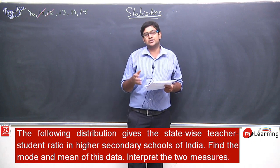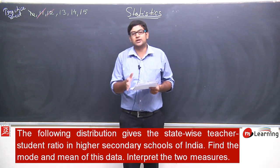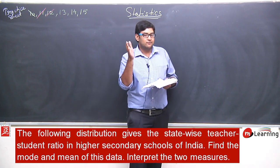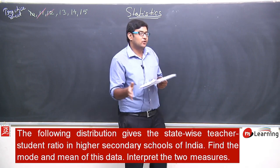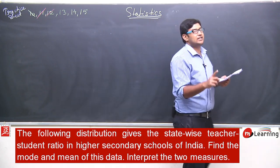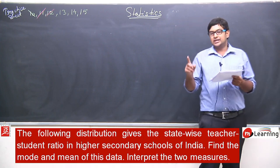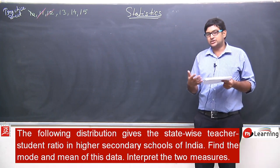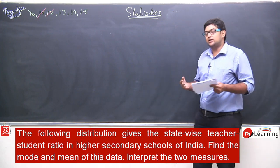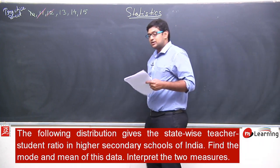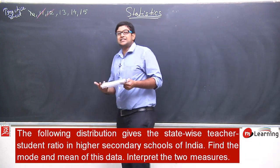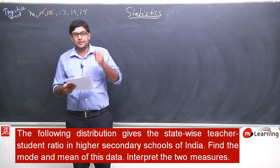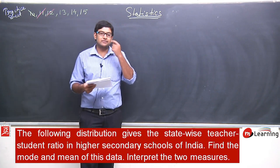For example, if the ratio is 5 to 1, it means for every 5 students there is 1 teacher. This ratio is calculated to know how many teachers are working in the field of education in a particular state.